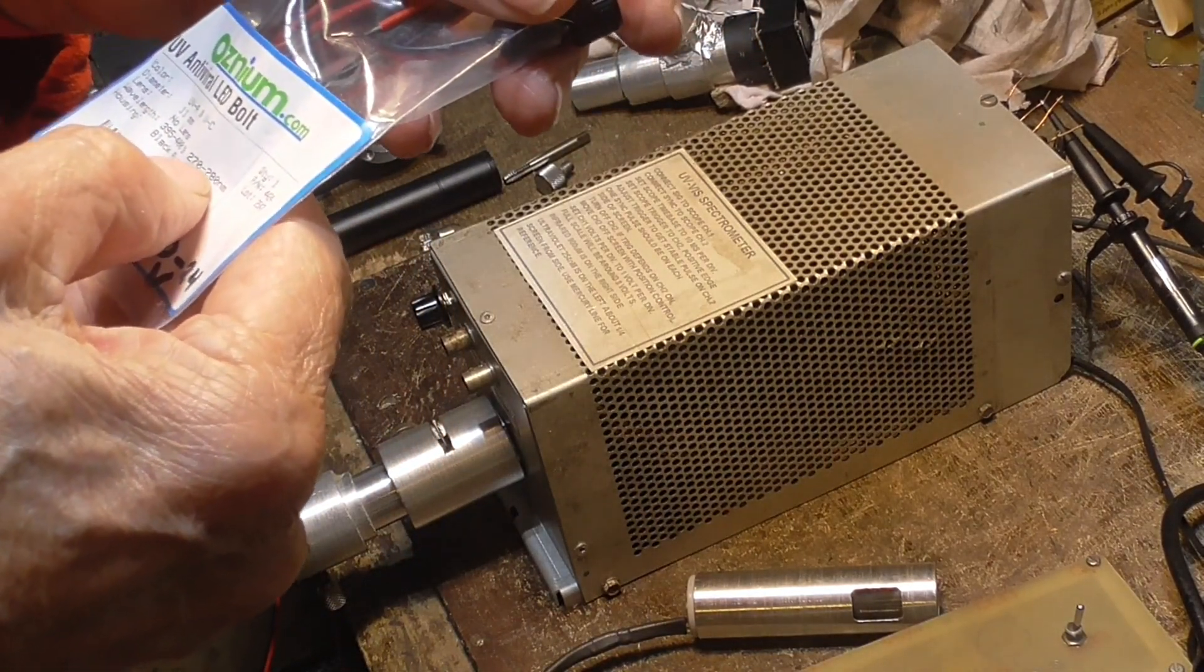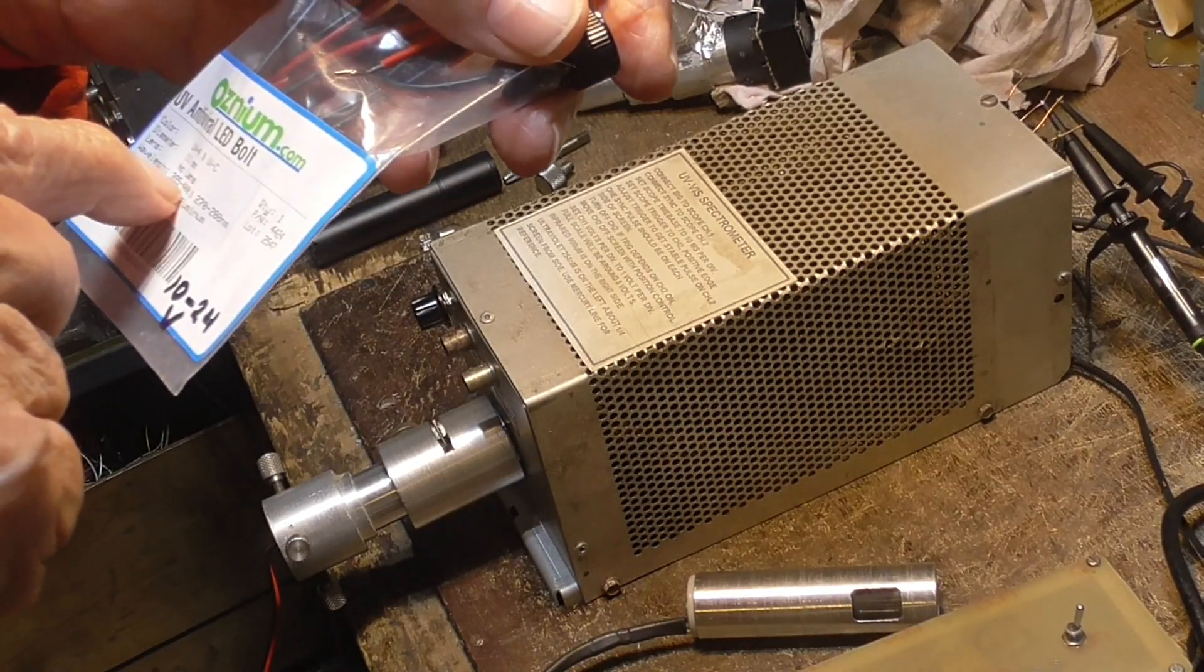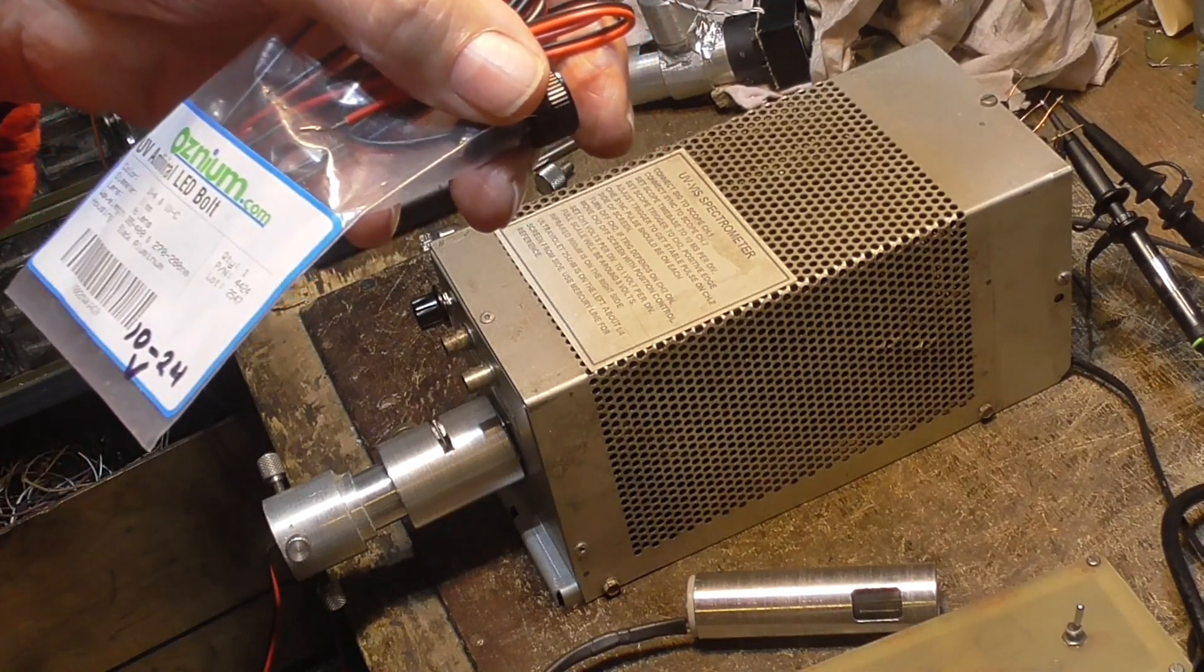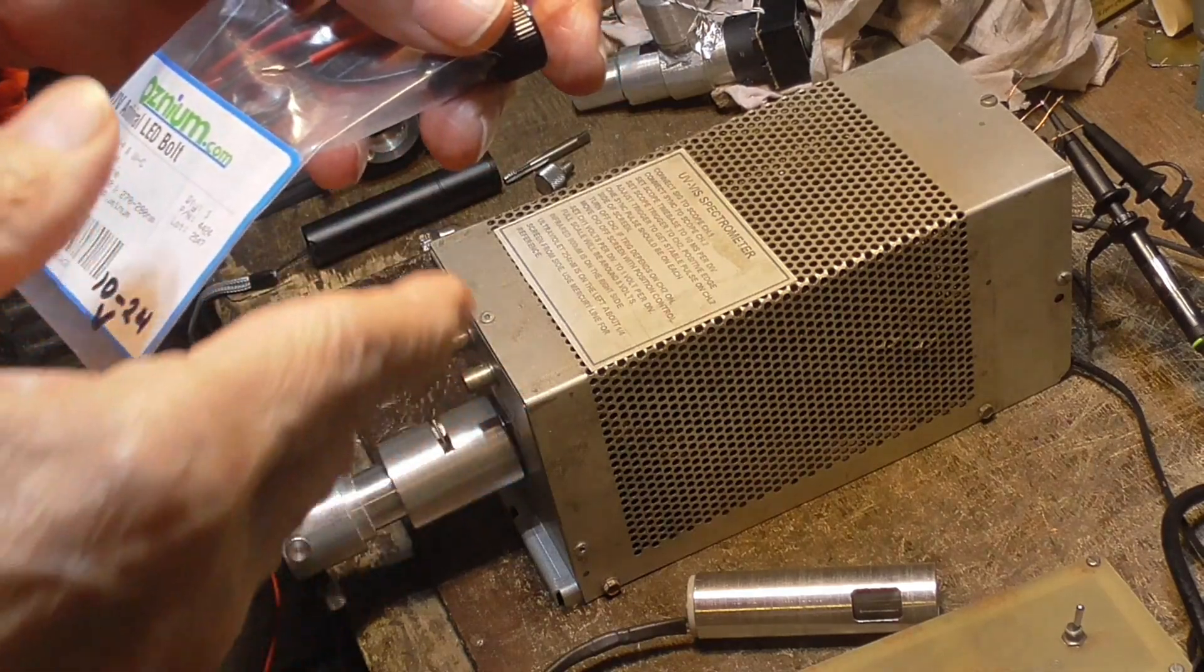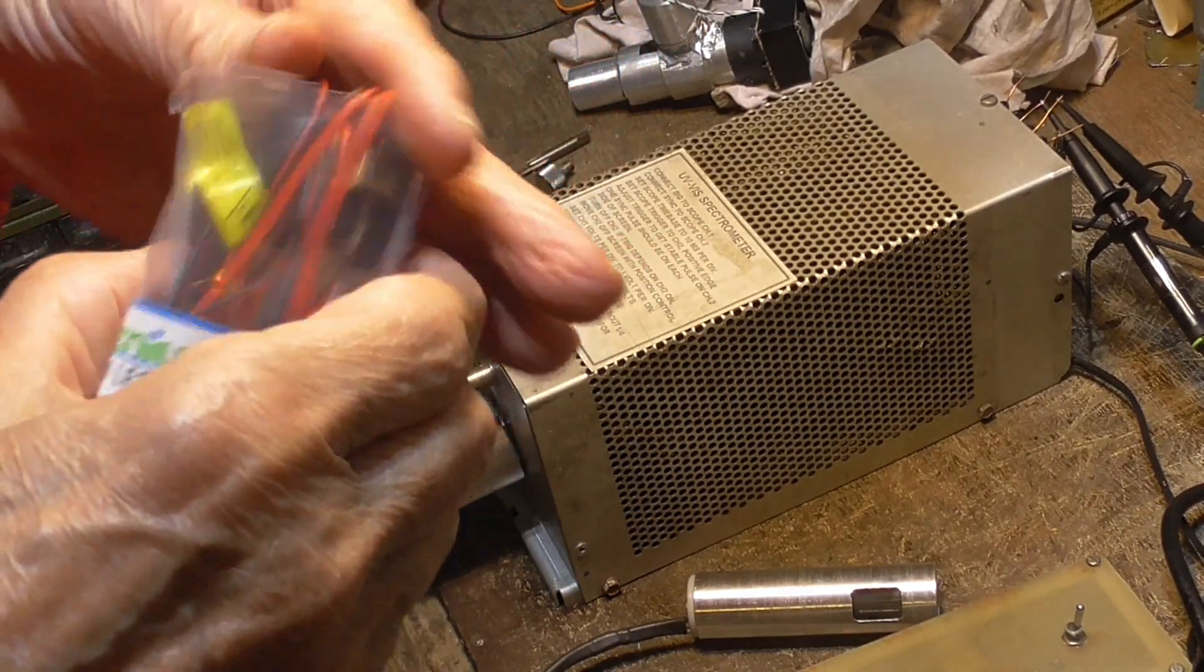That's the ultraviolet one. They say that they put the 395 to 400 so that you could tell easily where it was aimed, because you can't see the ultraviolet.